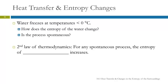Water freezes at temperatures below zero degrees Celsius. How does the entropy of the water change when it freezes? It decreases, because it becomes more ordered — there are fewer microstates to put the energy in. So the entropy of water decreases as it freezes. How is that process spontaneous, then?